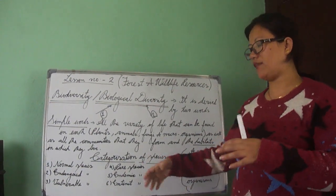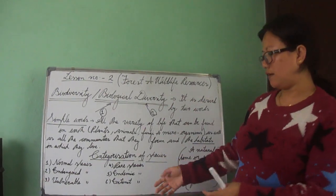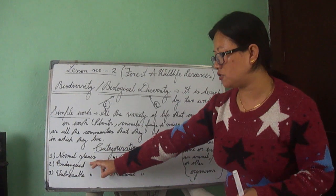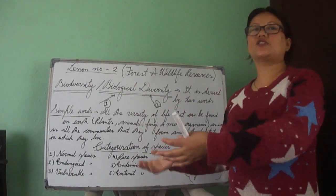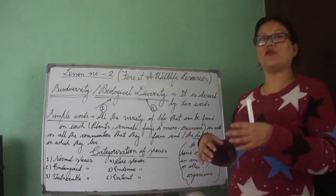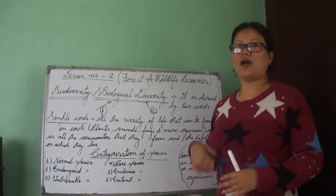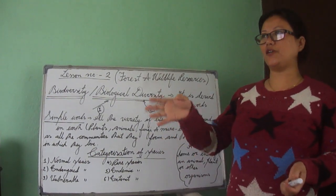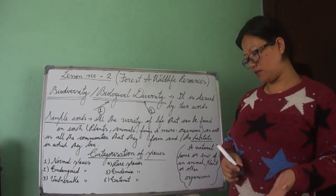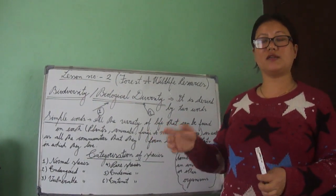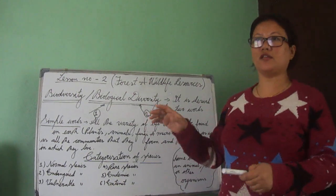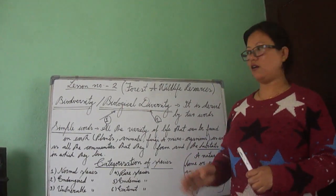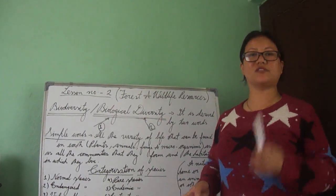So these are the types of species. Please understand: if vulnerable species are not protected, they will join the category of endangered; if endangered are not protected, they will join the category of extinct. Our future generations won't get a chance to see them — just like we read about dinosaurs, they might only read about mountain gorillas in books. With this, today's topic is over. I've added all the details in the description box if you want to prepare notes. Thank you.